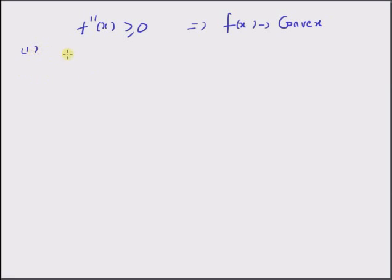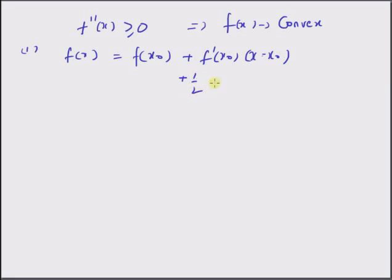It starts with the following definition based on the Taylor series expansion of function f of x around a point x naught, which is given as the summation: f of x naught plus the first derivative at x naught multiplied by the difference x minus x naught, plus one half the second derivative at a point x star multiplied by x minus x naught squared. This point x star is basically between x naught and x.